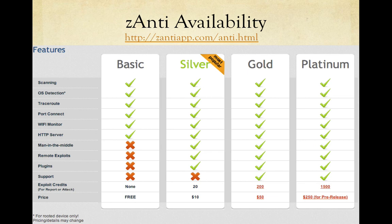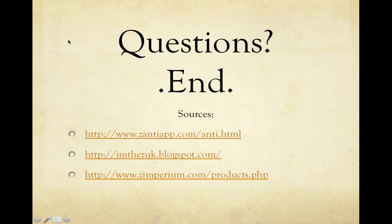You can get Z-Anti from zantiapp.com. You can do a lot with the basic version, but you'll need root access. The Silver version is probably the way to go — you won't get support but you'll get some credits to play around with. I went with Gold because I want more features and support to fully understand how the app works. The Platinum version is more pricey but gives you a pre-release version. You can email me at nfpenning@pluto.dsu.edu, and check out the sources I used.